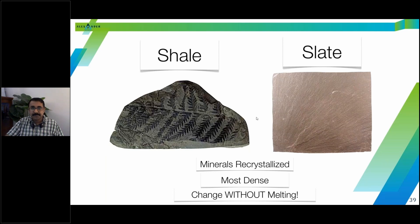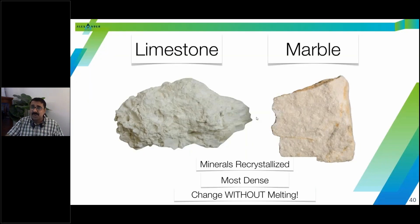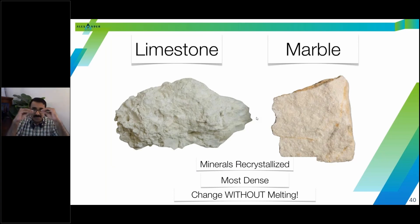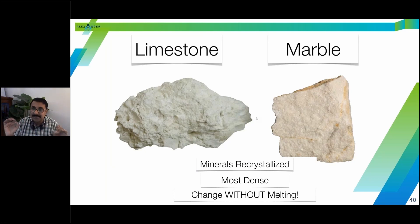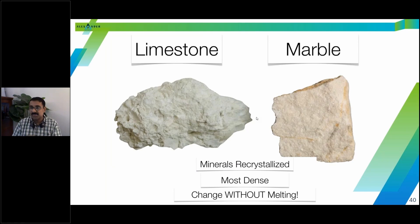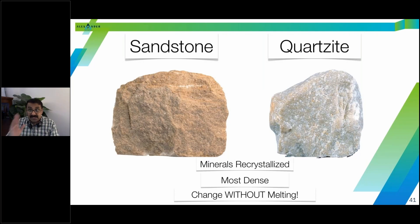Limestone is sedimentary and marble is metamorphic. The minerals are recrystallized because of heat and pressure, and limestone gradually becomes marble. This can happen through regional metamorphism where two plates are pushing into each other, or through contact metamorphism where heat from magma causes the rock to change and recrystallize.